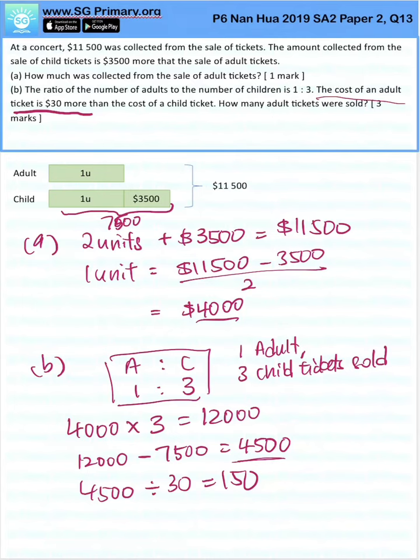Just now, we took $4,000 times 3, right, for the adults. Now, we need to bring it back and divide by 3, which will give us 50. The number of adult tickets sold is 50.